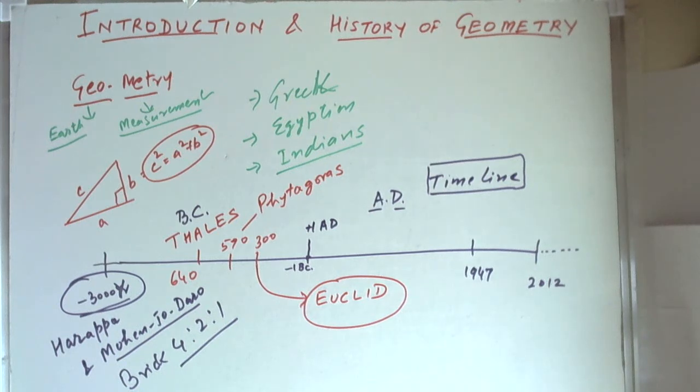He was among the first person who did the documentation, whereas prior to that the knowledge was being transferred by word of mouth. That is why we call it Euclid's geometry because he did the documentation of the various principles and formulas of geometry.